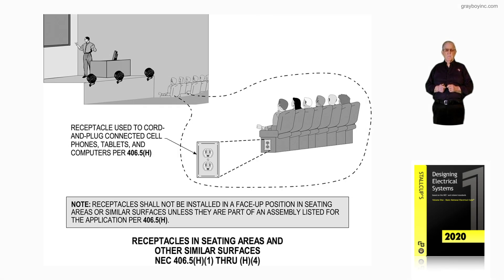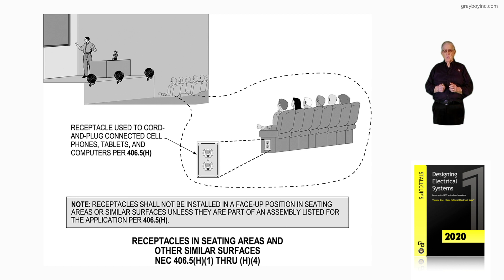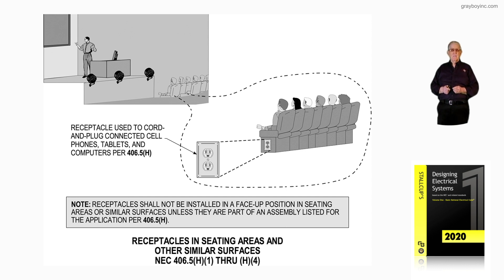This illustration deals with receptacles and seating areas and similar surfaces. When these areas and surfaces comply with NEC 406.5, notice these people may have computers and they're sitting there listening to a presentation as you see in the illustration.